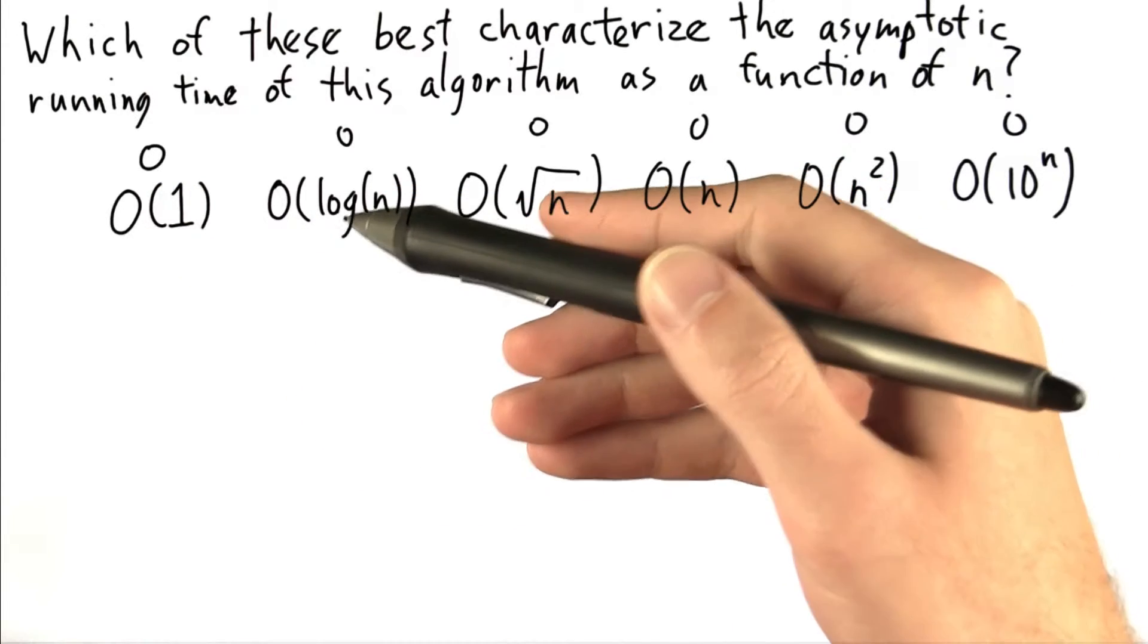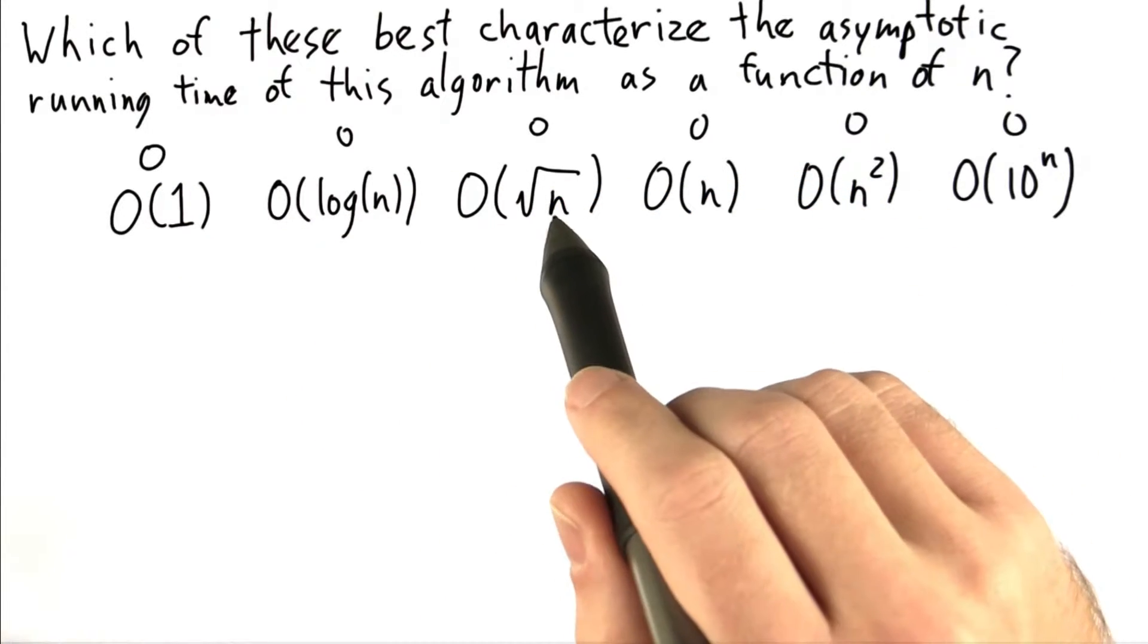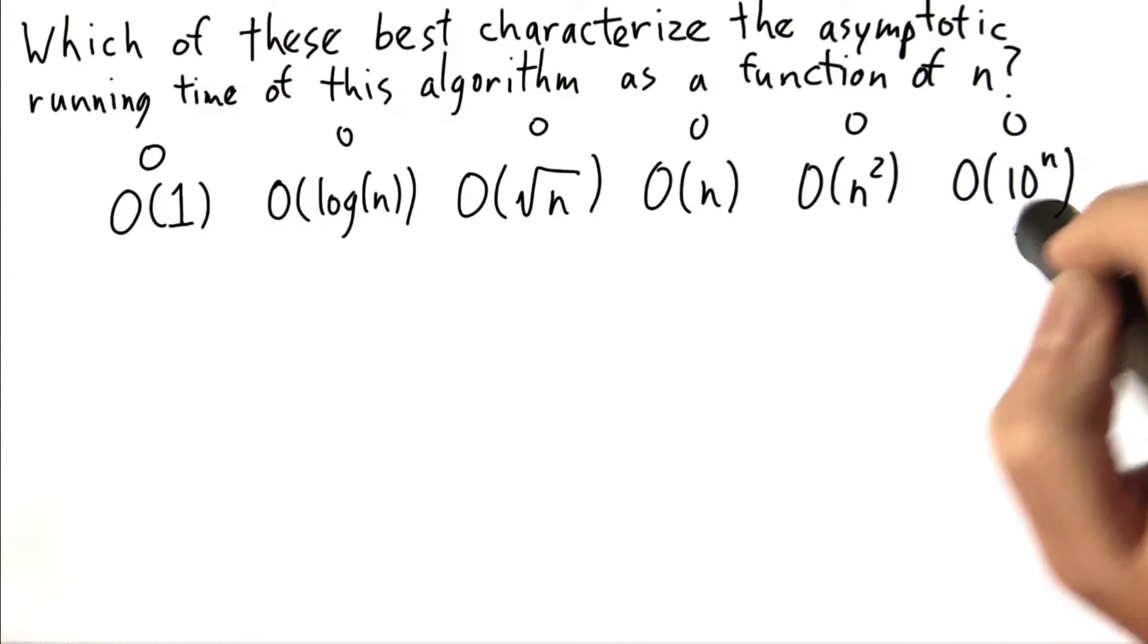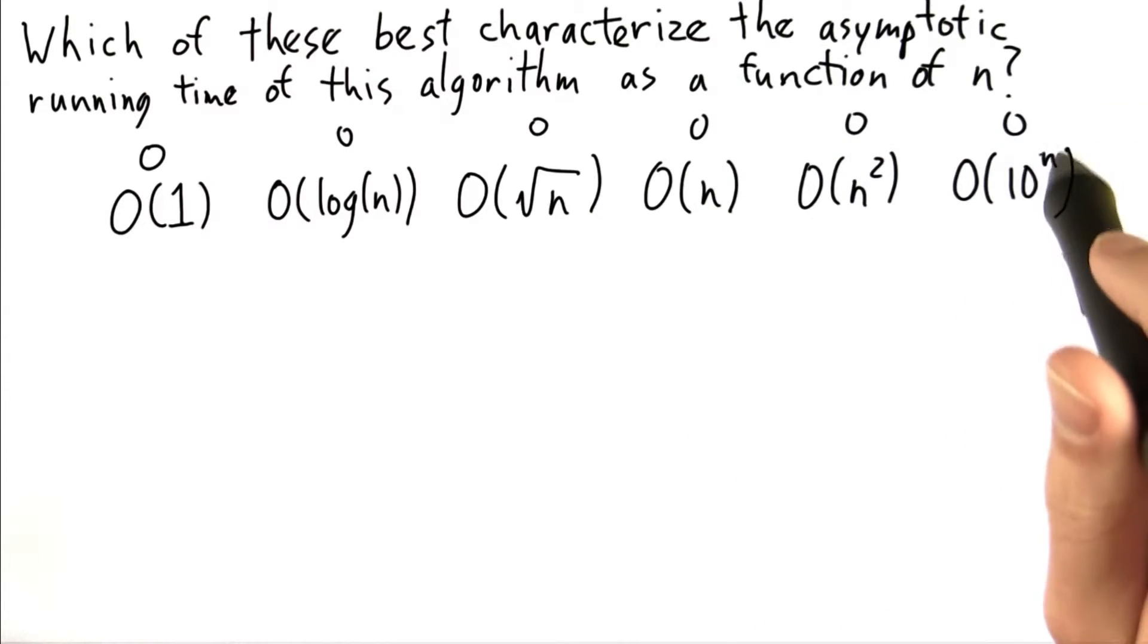Is it constant order, logarithmic? Is it on the order of the square root of n? Is it linear, quadratic? Or does it turn out that this is exponential?